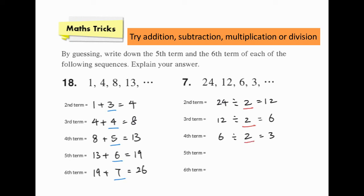We can then use this pattern to find the next two terms. Divide 3 by 2 is 3 over 2. Finally, divide 3 over 2 by 2 is 3 over 4. That's it.